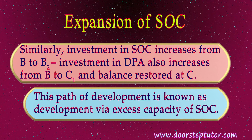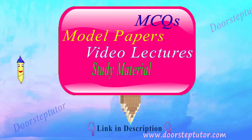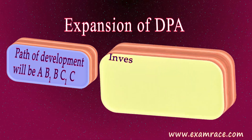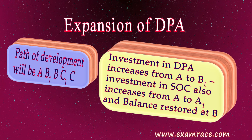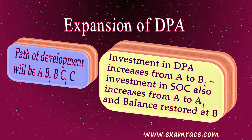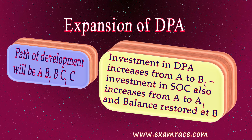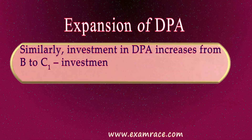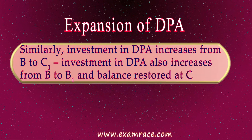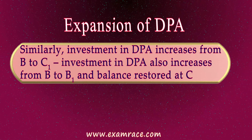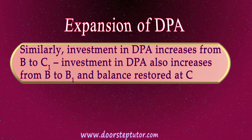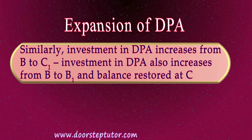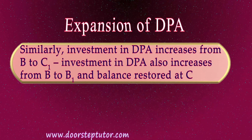This path of development — A→A1→B→B2→C — is called development via excess capacity of Social Overhead Capital. Looking at the other path, A→B1→B→C1→C: when investment in DPA is increased from A to B1, investment in SOC also increases from A to A1, and balance is restored at B on higher isoquant 2, implying a higher national output. This higher output encourages private entrepreneurs to invest more in DPA, shifting investment from B to C1, which makes SOC increase from B to B1. Consequently, balance is reached at higher isoquant 3, increasing national output.